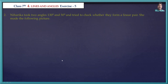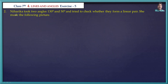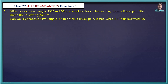Next problem. Niharika took two angles, 130 degrees and 50 degrees, and tried to check whether they form a linear pair. She made the following picture. Can we say that these two angles do not form a linear pair? If not, what is Niharika's mistake? Niharika took one diagram with 130 degrees and 50 degrees.